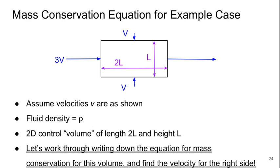So let's try to develop the mass conservation equation for an example case. Assume the velocities V are as shown: 3V coming in on the left, V coming in from the top, V going into the bottom. The box is 2L long and 1L high, and the fluid density is some constant rho.